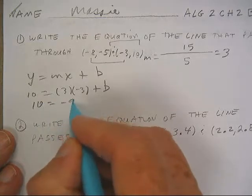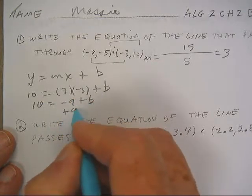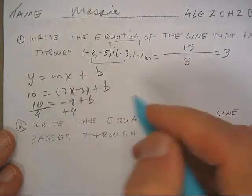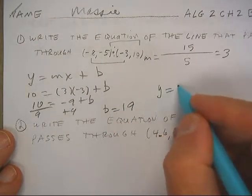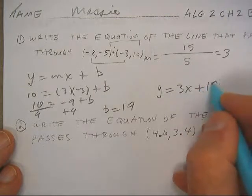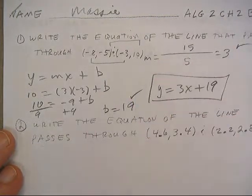That's 10 equals negative 9 plus b. Add 9 to both sides. And b is going to be 19. And the equation is 3x plus 19. Slope intercept.